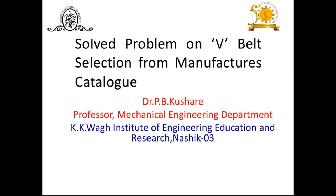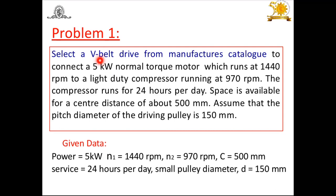In the earlier session, we have seen how to select the V-Belt from the manufacturer's catalog. Now in this presentation, we will see how to select a V-Belt from the manufacturer's catalog by taking one example. The problem statement is: select a V-Belt drive from the manufacturer's catalog to connect a 5 kW normal torque motor running at 1440 rpm to a light-duty compressor running at 970 rpm. The compressor runs 24 hours per day, and the space available for center distance is 500 mm.